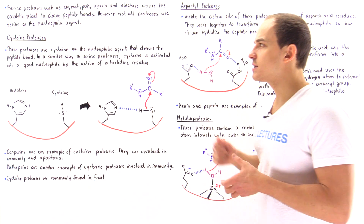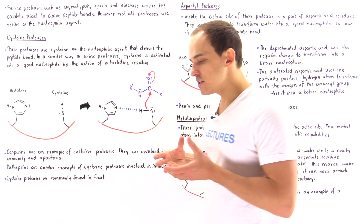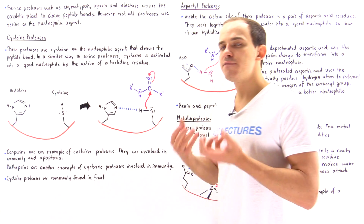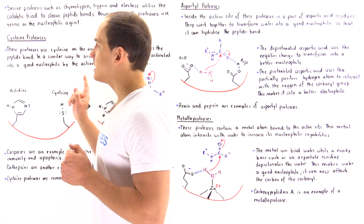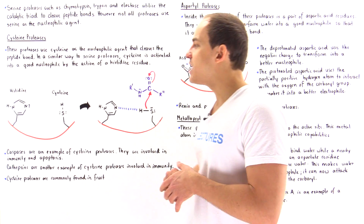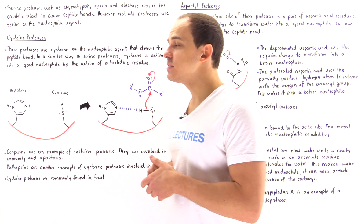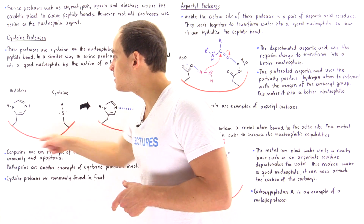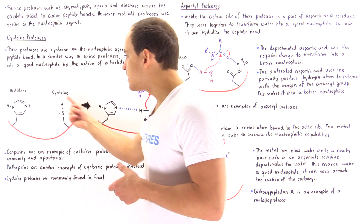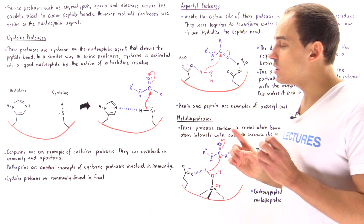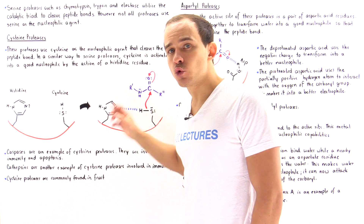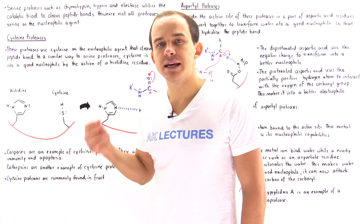Let's begin by briefly discussing cysteine proteases. In cysteine proteases, amino acids in the active site work together to catalyze the cleavage of peptide bonds. But unlike serine proteases, it's the cysteine residue in the active site that acts as the nucleophilic agent to cleave that peptide bond. Looking at the diagram, cysteine in its current form is not a strong enough nucleophile — the sulfur will not be able to attack the carbon of the carbonyl group on the substrate molecule.